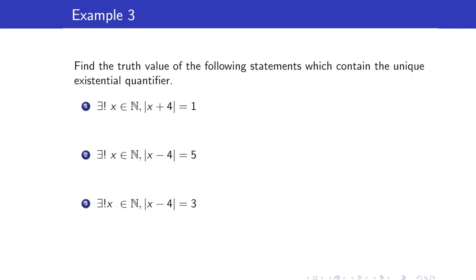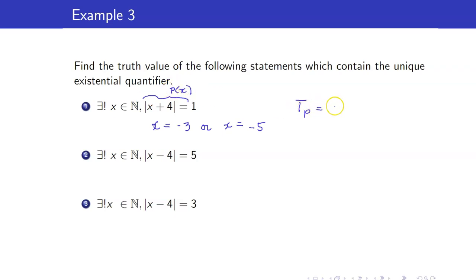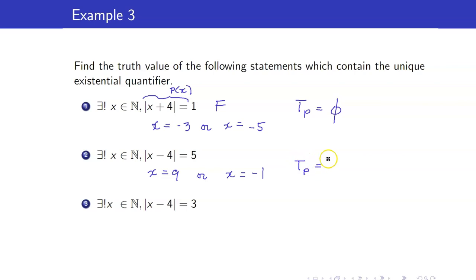The statement 'there is only one even prime integer' can be formally written as 'there exists a unique integer x in ℤ such that x is prime and x is even.' For the first example: there exists a unique x in ℕ such that |x + 4| = 1. Solving gives x = -3 or x = -5, but neither is in ℕ, so the truth set is empty and this statement is false. For the second example, solving gives x = 9 or x = -1; only x = 9 is in ℕ, giving exactly one element in the truth set, so this statement is true.